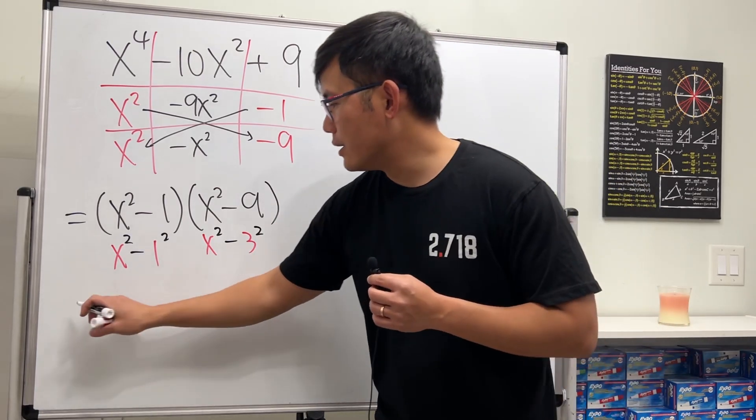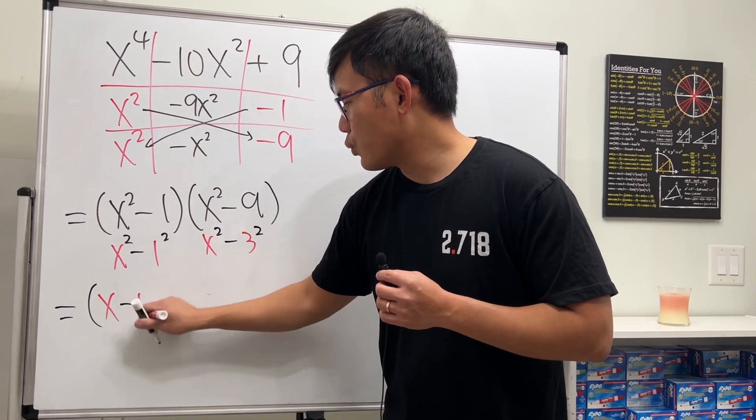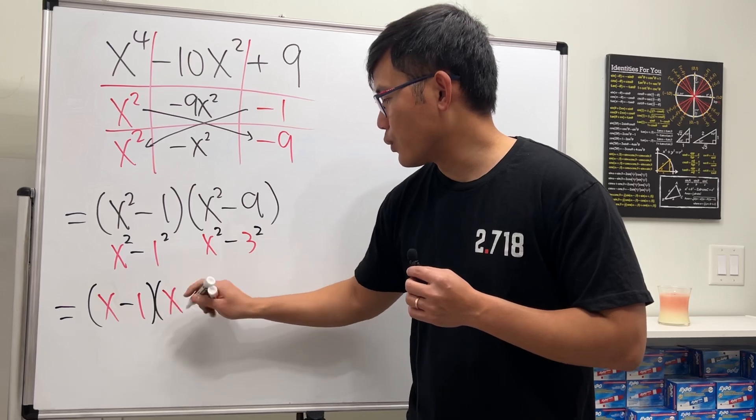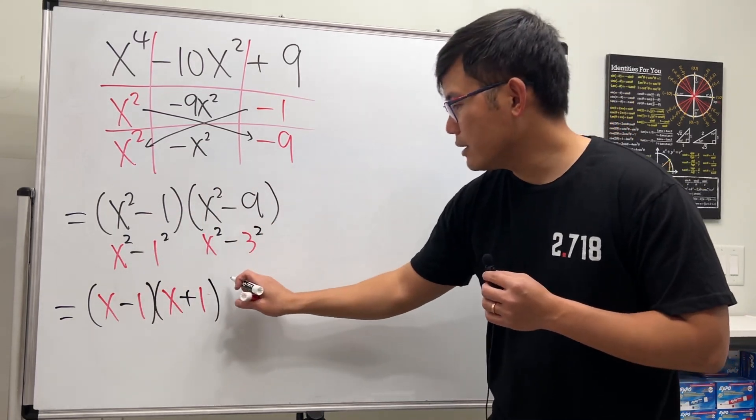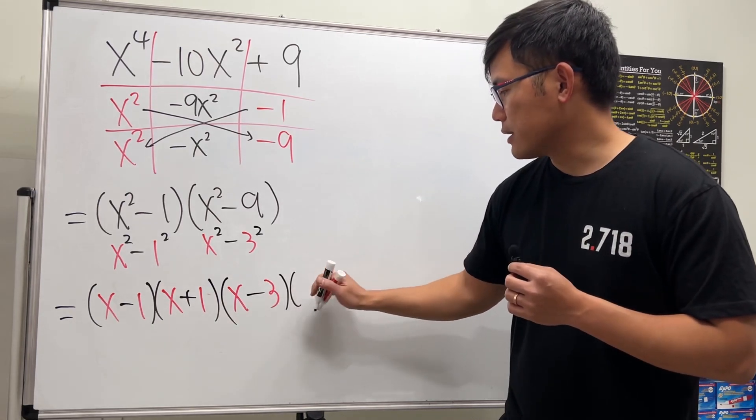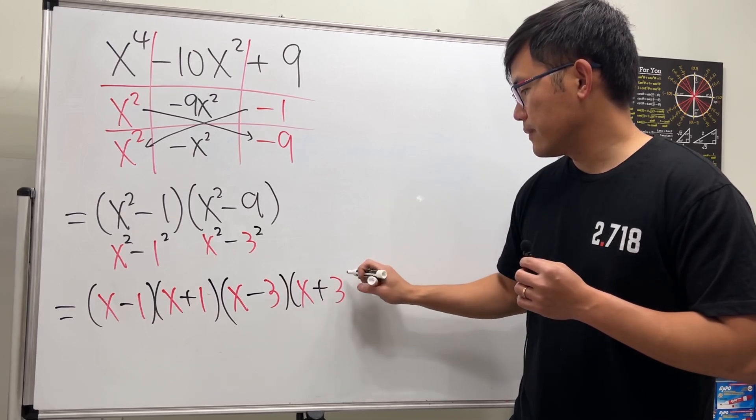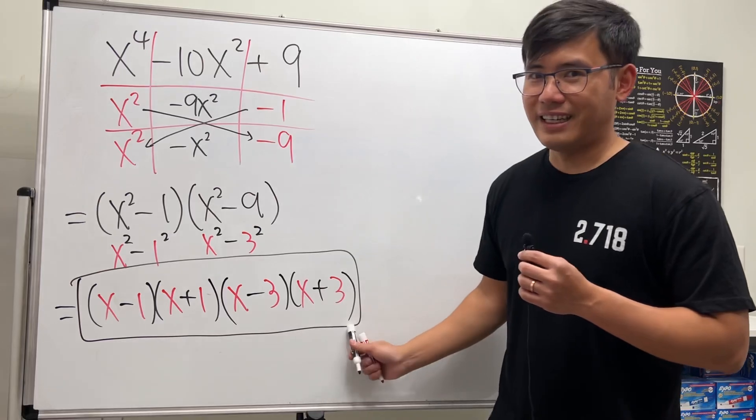So we will continue. This right here will be x minus 1 times x plus 1, done for the first part. And then for this one we will get x minus 3 times x plus 3. And now we are all done.